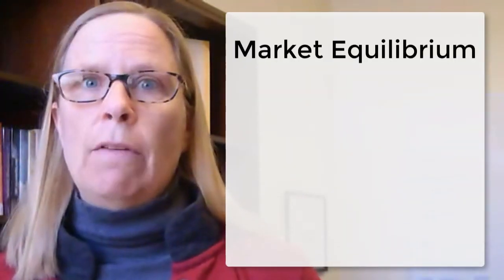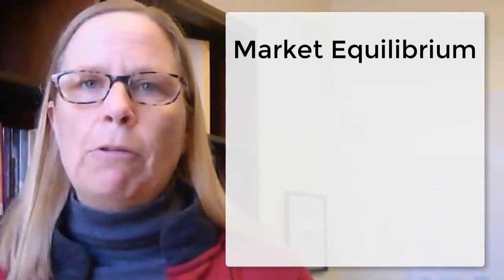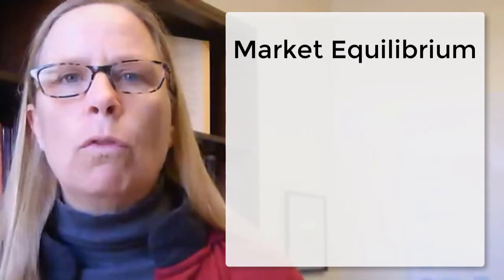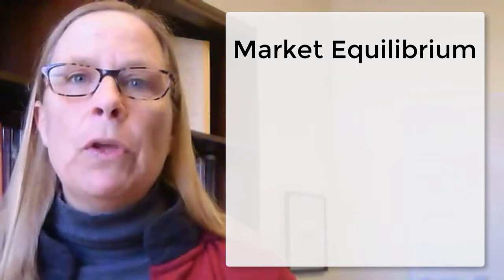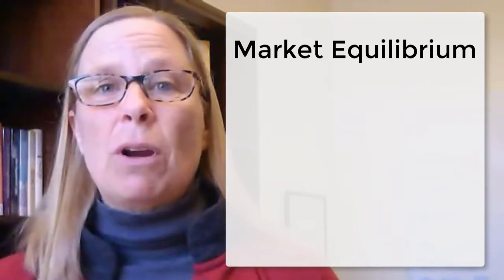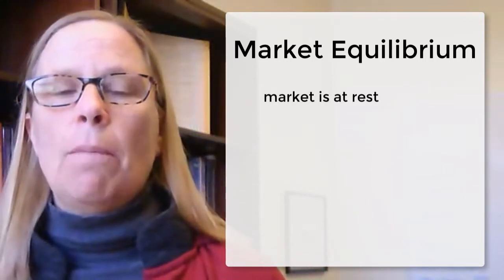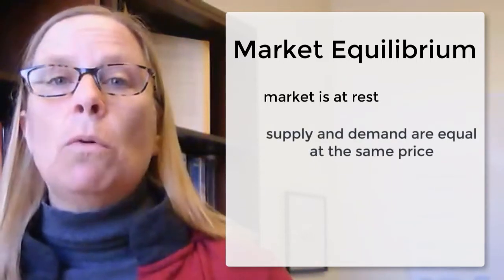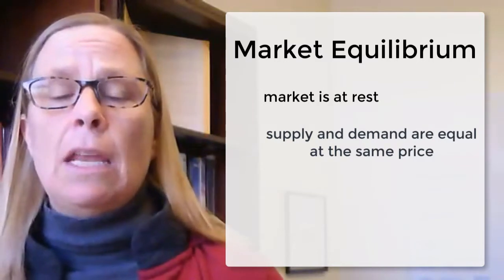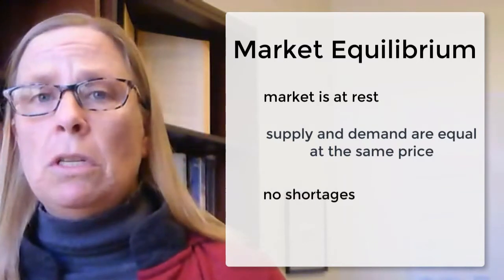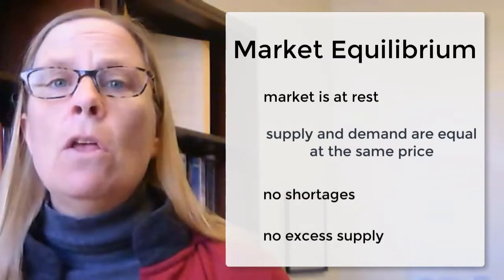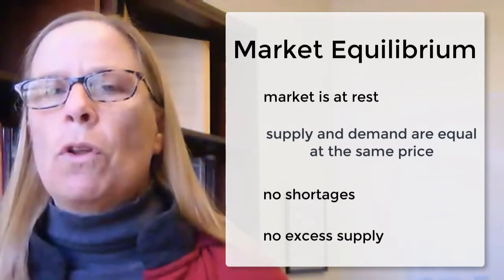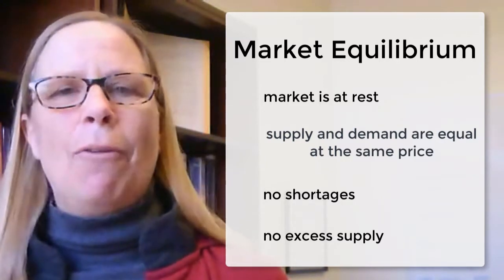The first one is market equilibrium. In this module we have learned how to find market equilibrium graphically and how to solve for it in a mathematical model. The definition of market equilibrium is a point at which a market is at rest where supply and demand are equal at the same price. In market equilibrium there are no shortages and there's no excess supply, so there's no pressure for the price to change — we're sort of at rest.